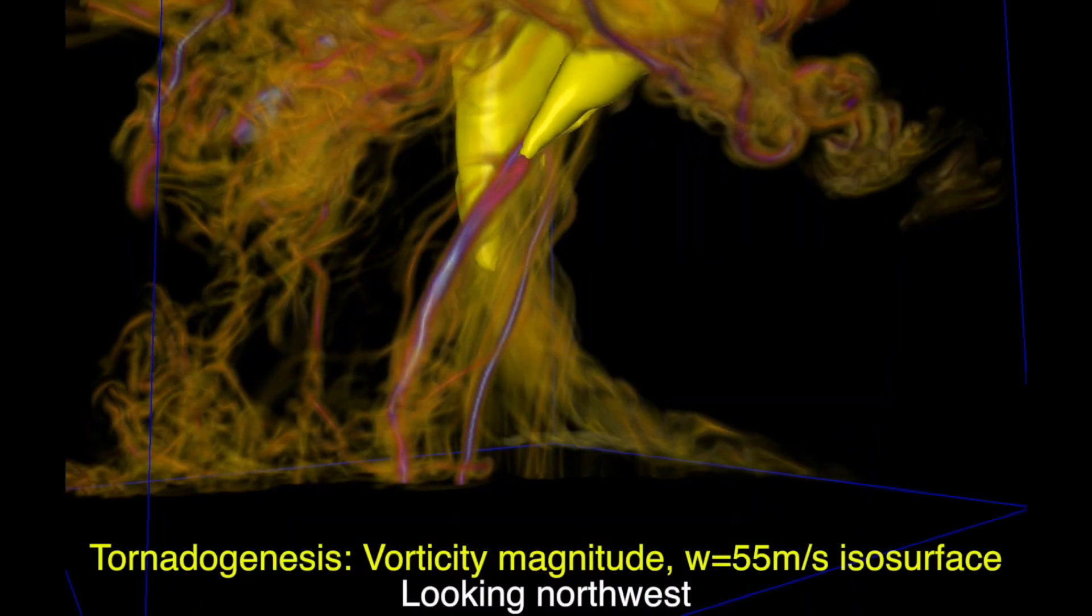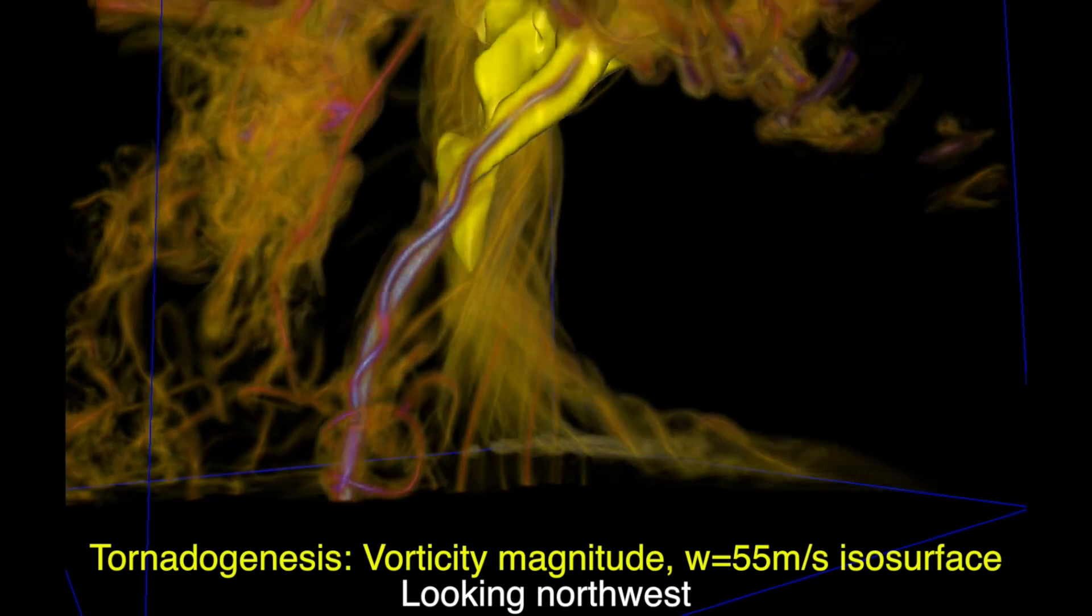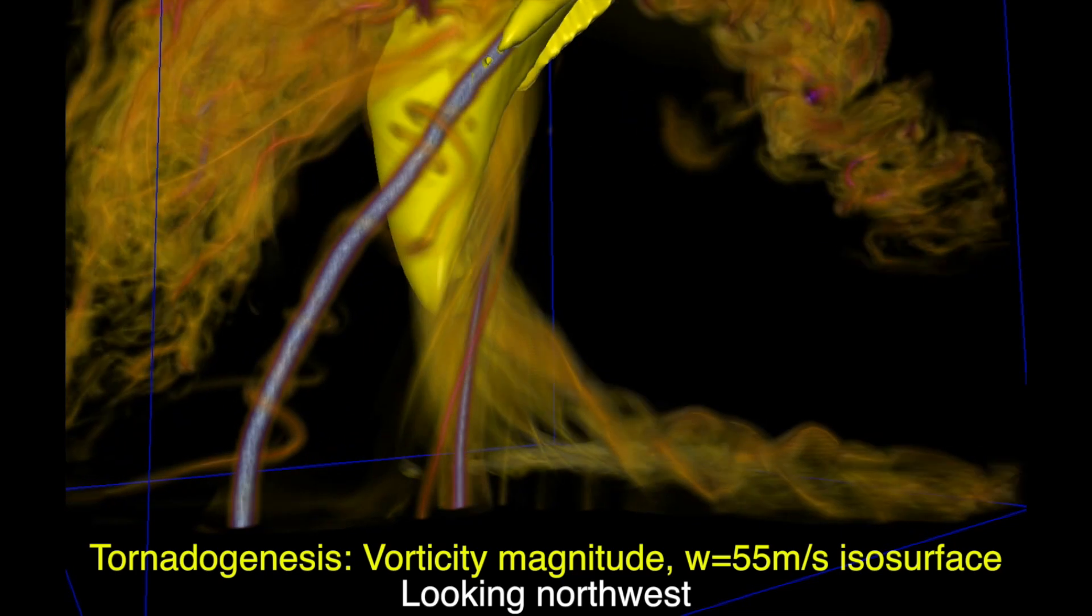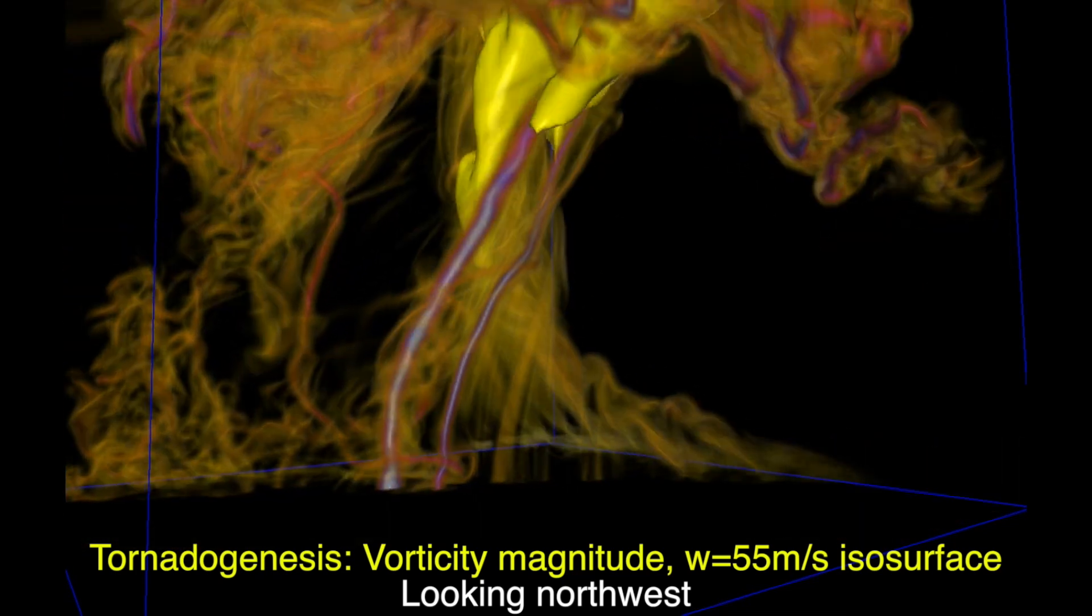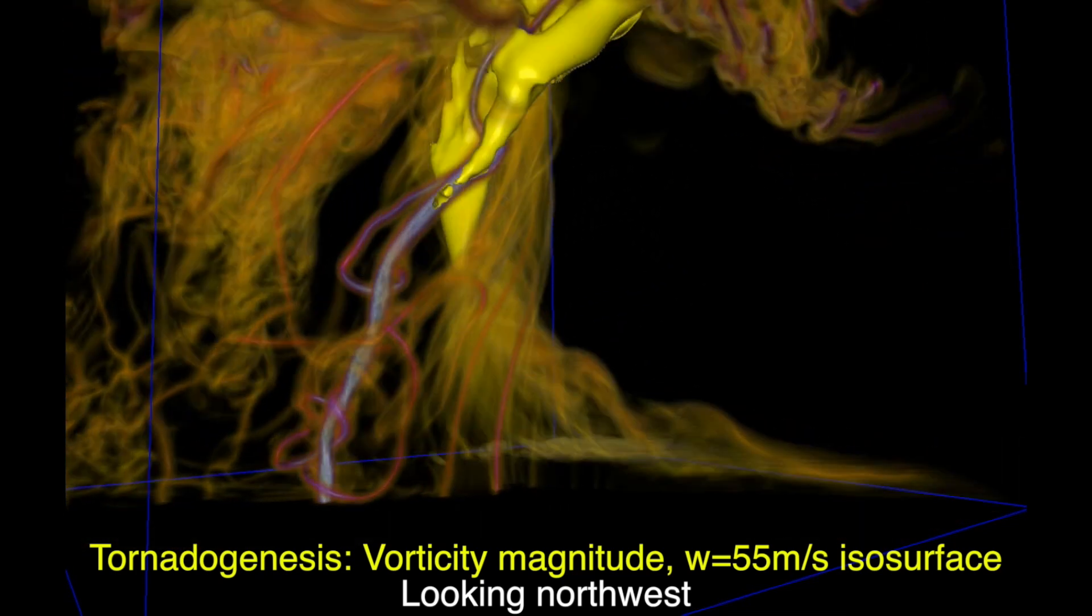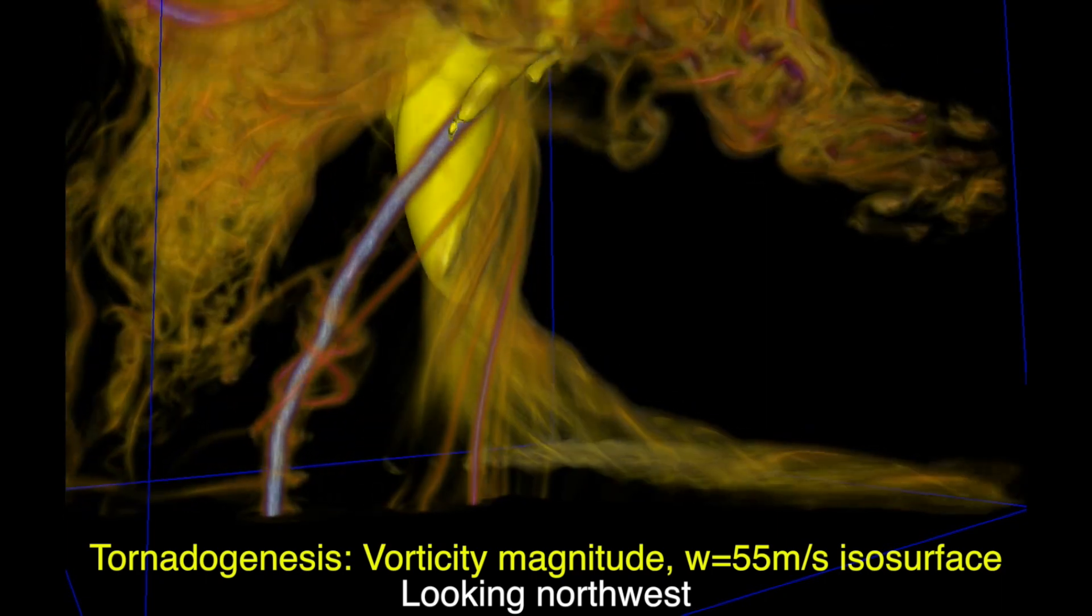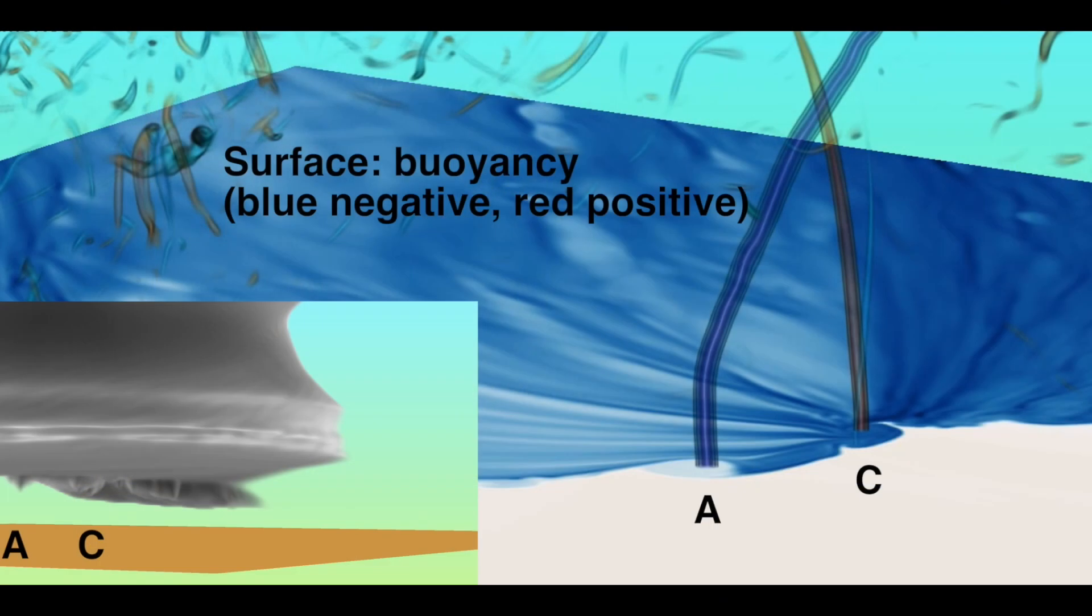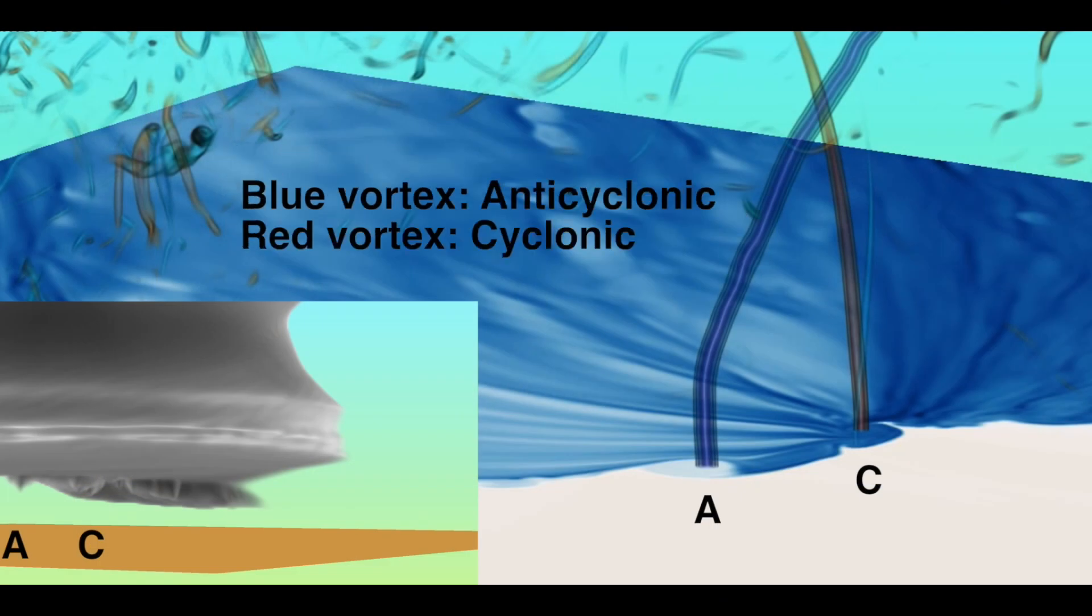So here we have the developing tornado right here. This is actually an anticyclonic circulation. This is the updraft isosurface, indicating that the updraft is essentially just sucking air from the surface and reconfiguring it in such a way as to help to keep maintaining it. And this is really exciting because we've never seen this before, and visualization helps bring out these features.